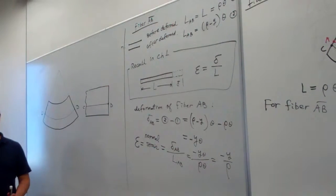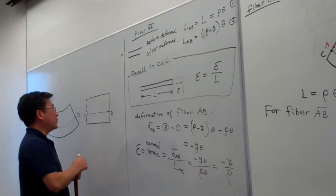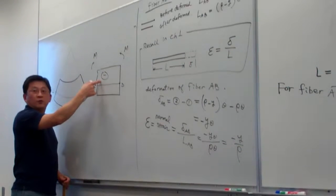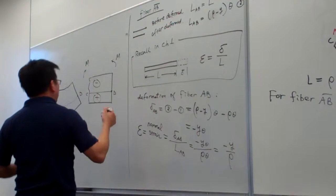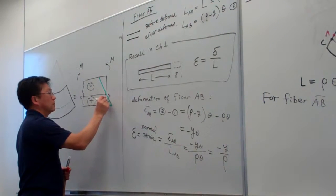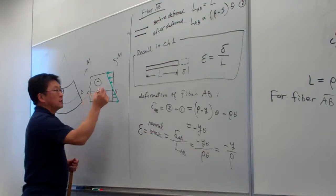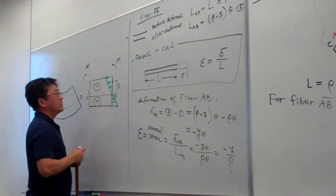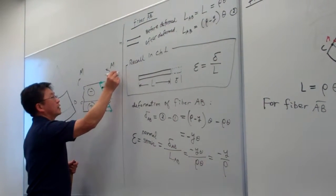In most textbooks, we draw the distribution of strain on the undeformed model for better illustration. For example, if bending is in this direction, we know the top portion is in compression (negative strain) and the bottom portion is in tension. The distribution of strain is like this, and at a point located at distance y, the magnitude is ε = minus y over ρ.